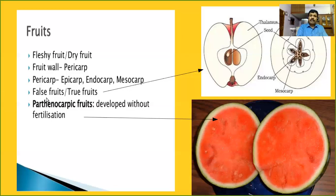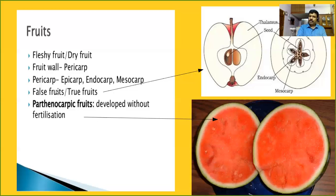Now we are going to discuss different types of fruits based on their development. The ovary should be converted into fruit after fertilization. In the majority of angiosperms, the fruit develops from the ovary — such fruits are collectively called true fruits. But in some plants, the thalamus also contributes to the formation of fruits. Such fruits are collectively called false fruits.